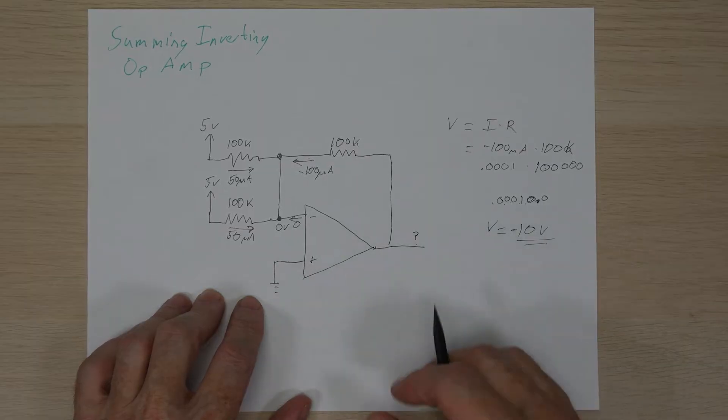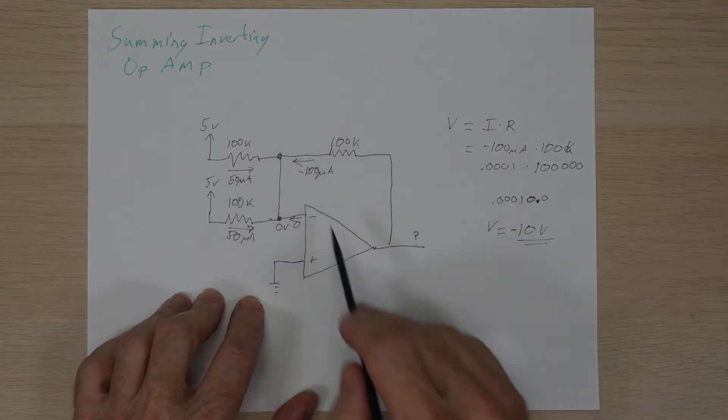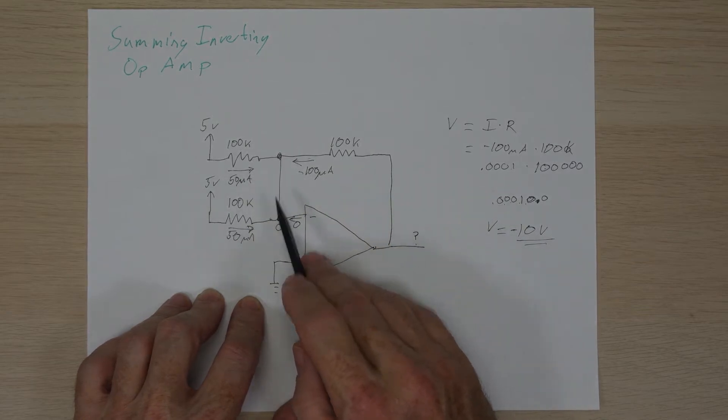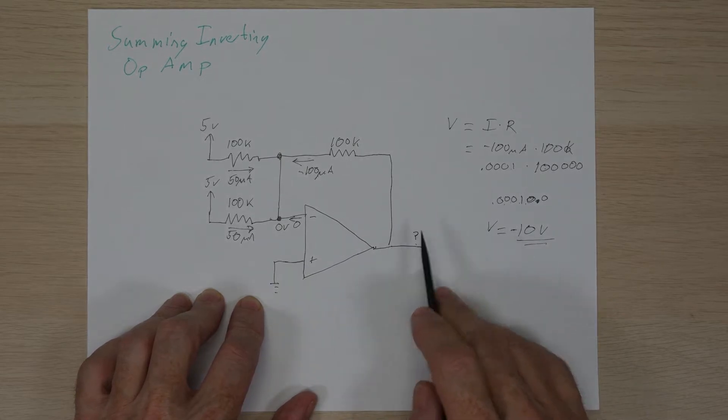First, let's take a look back at the summing-inverting op-amp that we looked at in a previous video. If you recall, we needed a negative current flowing back into this node here so that the sum of all the currents would be zero volts. This meant that we needed to use the inverting input to be able to get a negative output at this point in our circuit.